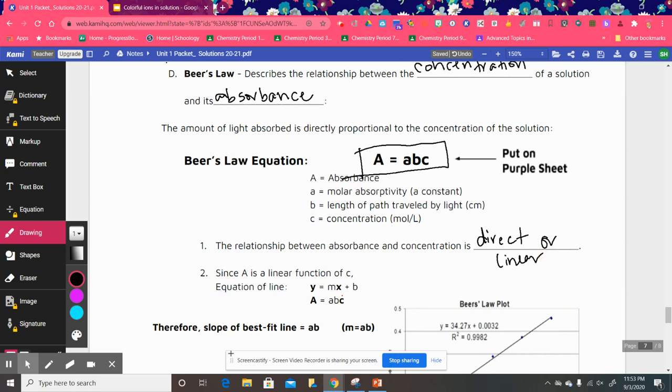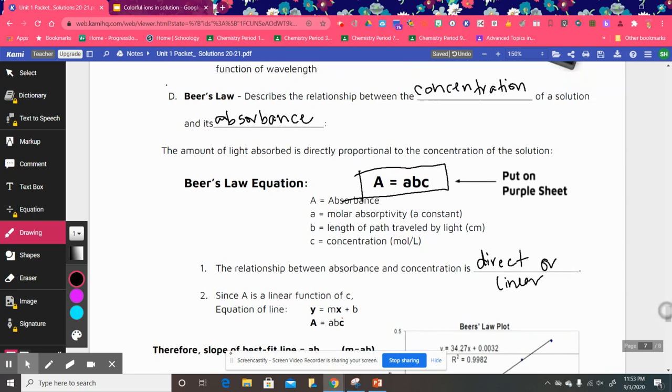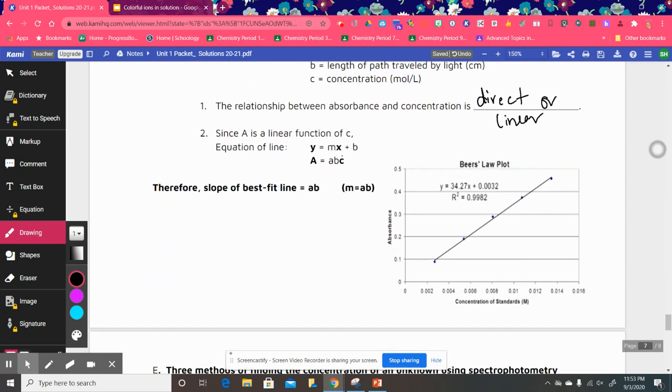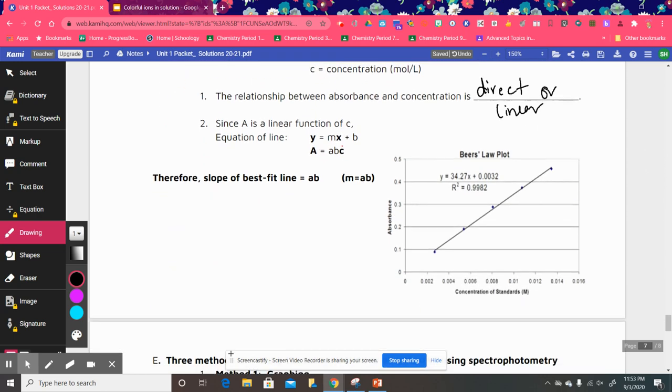Since absorbance is a linear function of C, we can use slope-intercept formula to get the equation from the data that is graphed. So we know slope-intercept formula is y equals mx plus b.